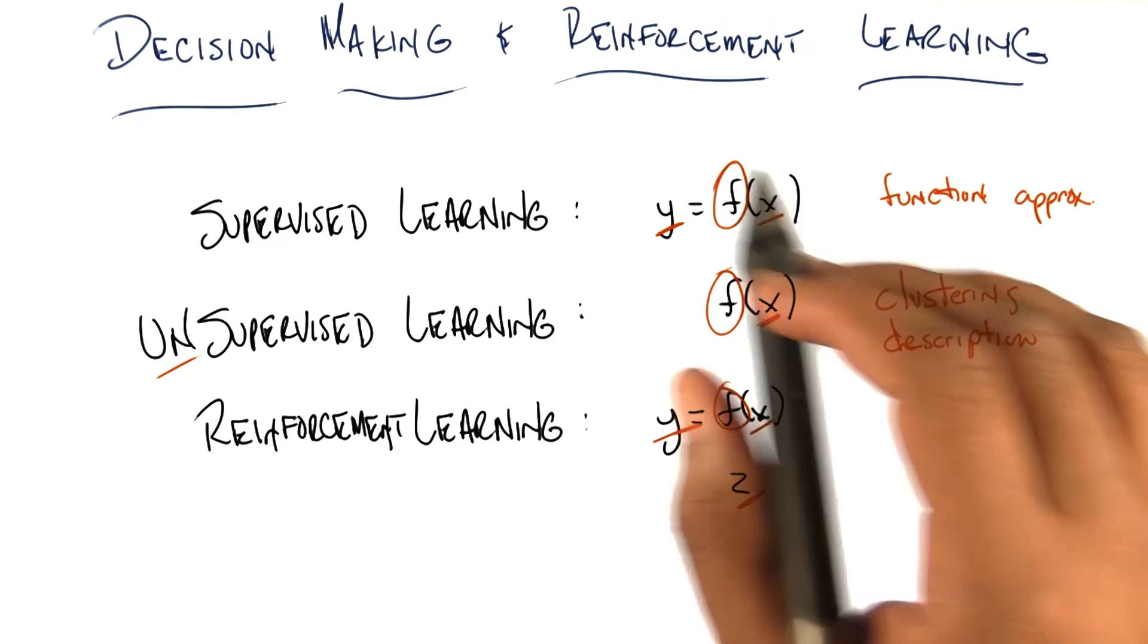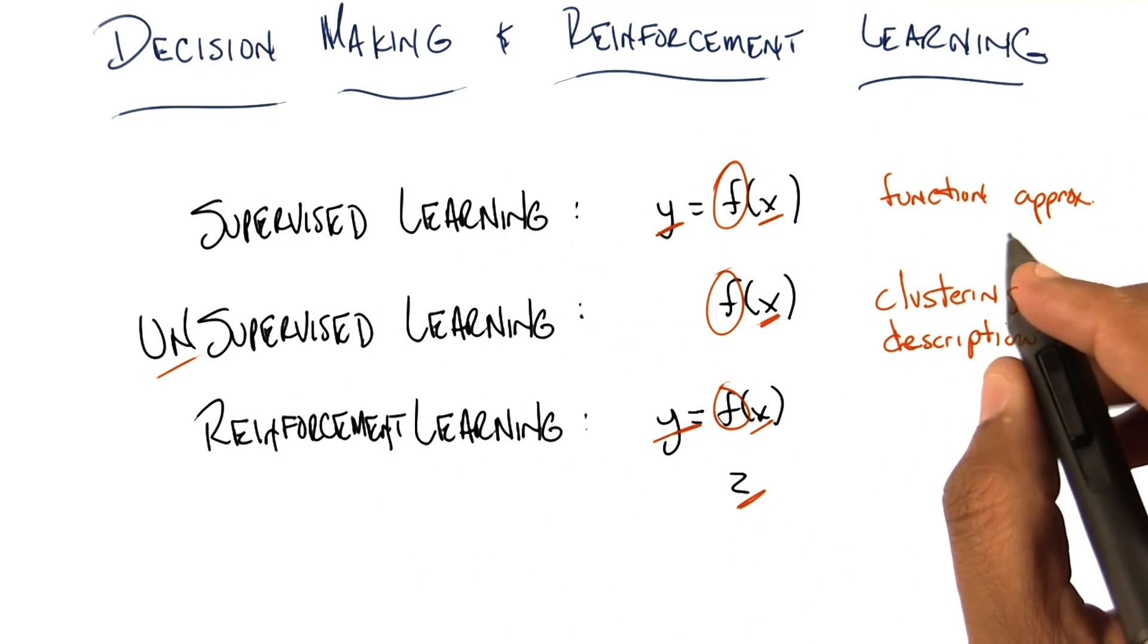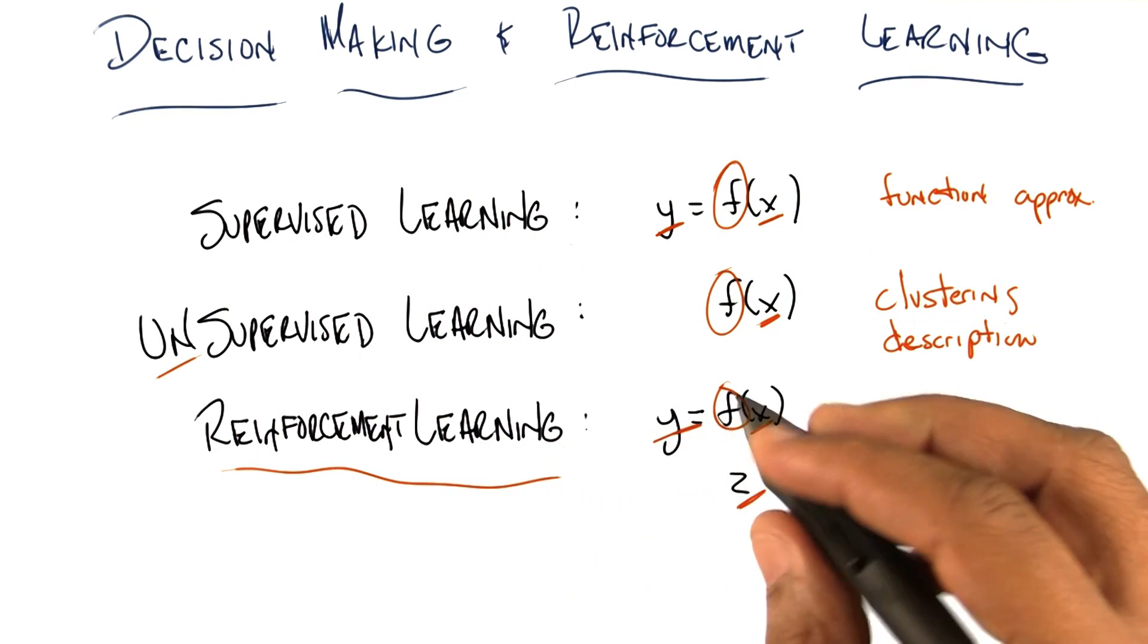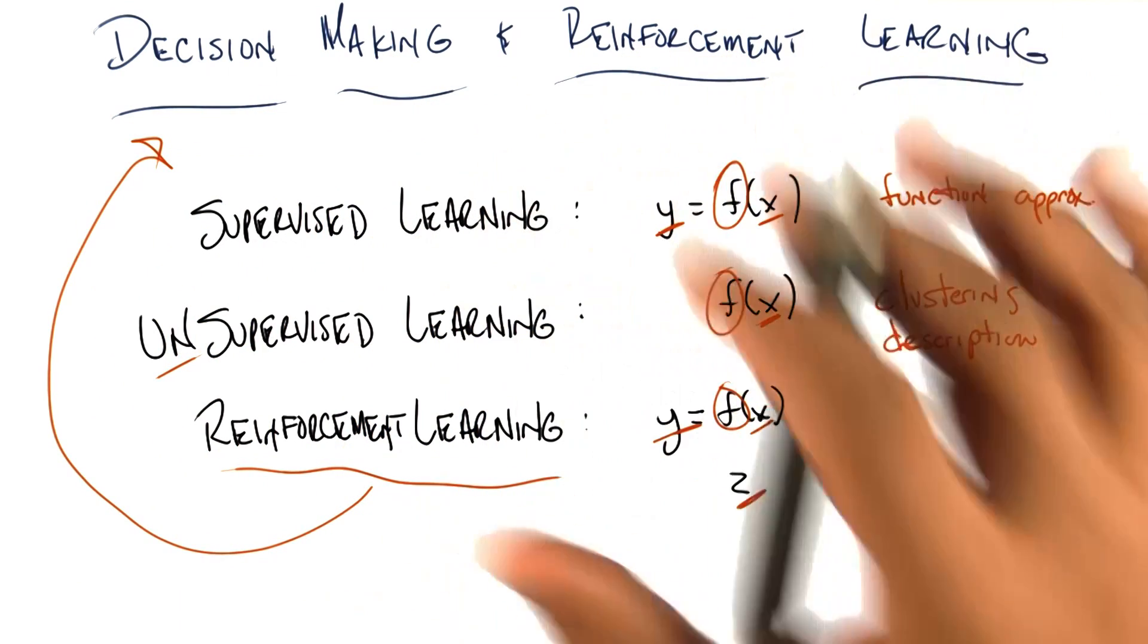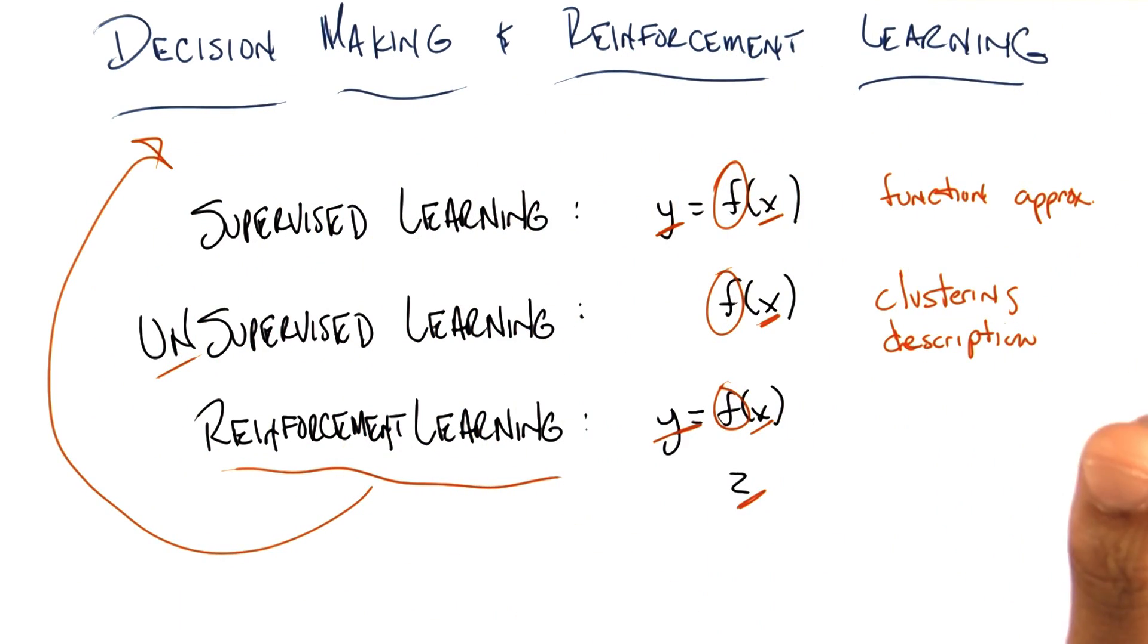You'll also notice from the title here that I have decision making and reinforcement learning. And that's because reinforcement learning is one mechanism for doing decision making. And again, I'll define that in just a second. Okay, so you're with me, Michael? I think so.